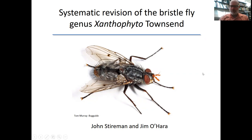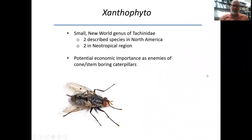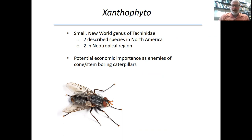Before I talk about Xanthophyto, I just want to mention that there are over 300 genera of tachinids in North America and the vast majority of them need revision. One of the reasons I decided to embark on this project with Xanthophyto is I thought I could chip away a little bit — it's a small piece of that. I thought Xanthophyto would be a pretty easy place to start because there are only two described species in North America and another two described species in the neotropical region.